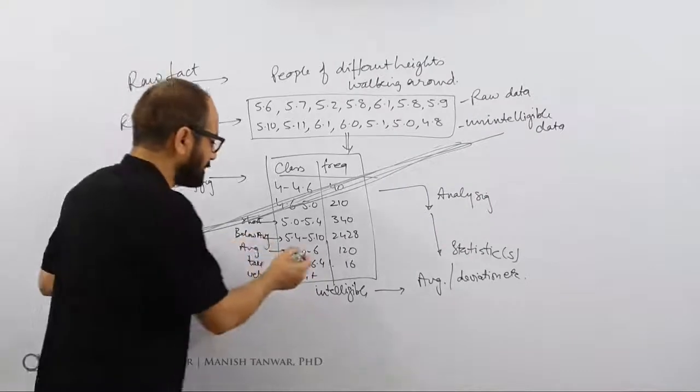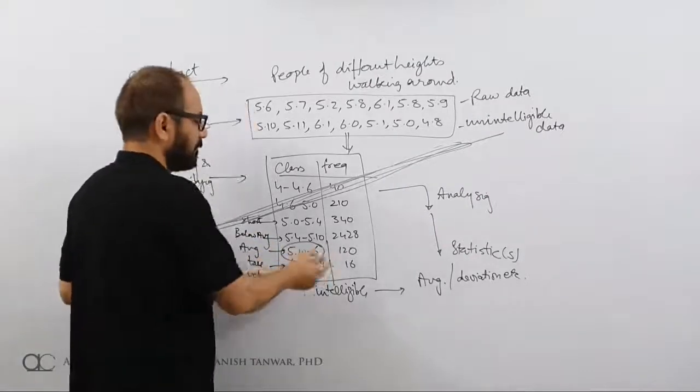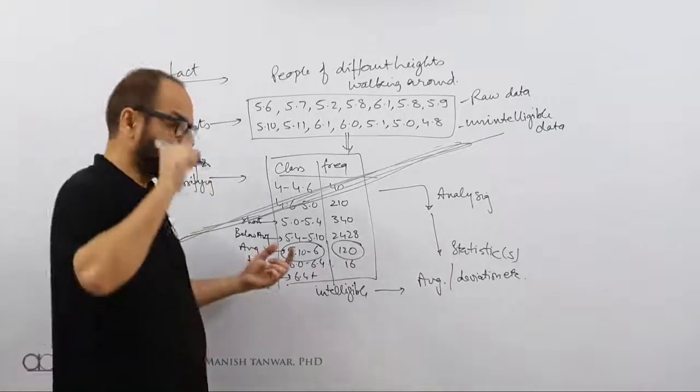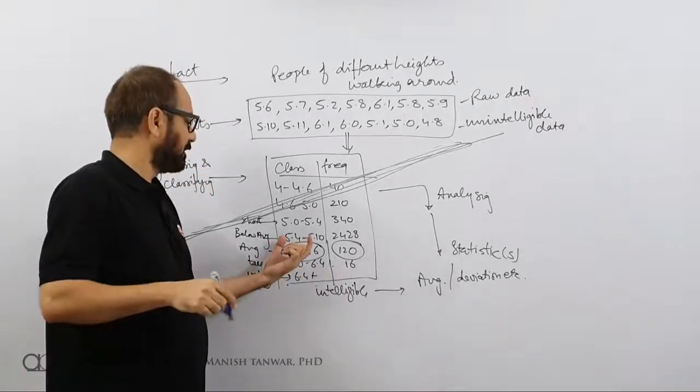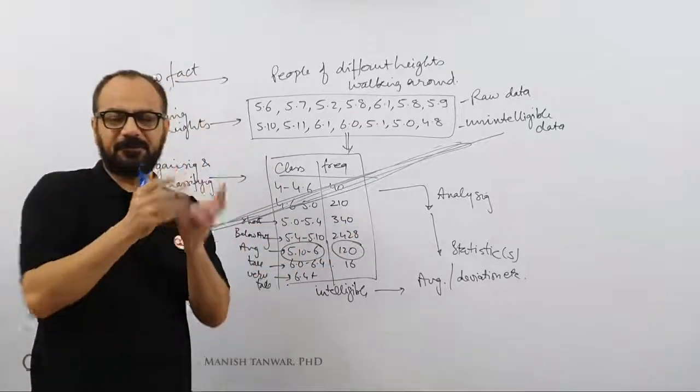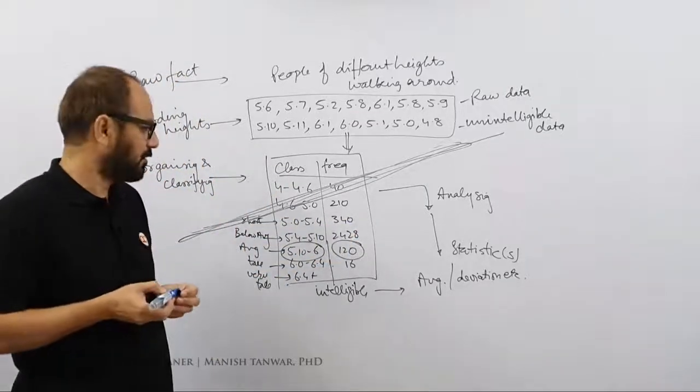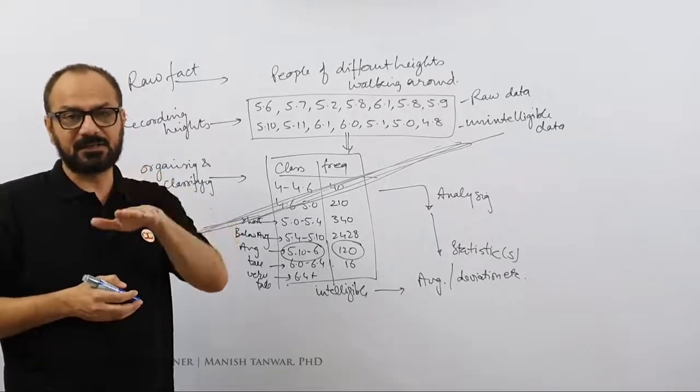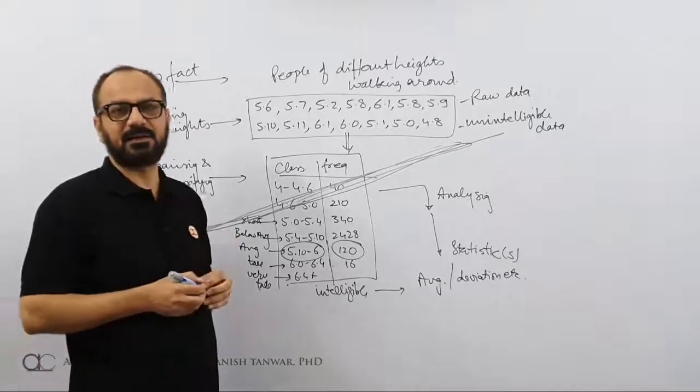Because when you form classes, when you start forming classes, then it becomes operation on data. Because it was your logic that converted, that grouped 5.4 to 5.10. All people between 5.4 to 5.10 were grouped into one class. So that was your logic. That is where you started manipulating or operating upon data.